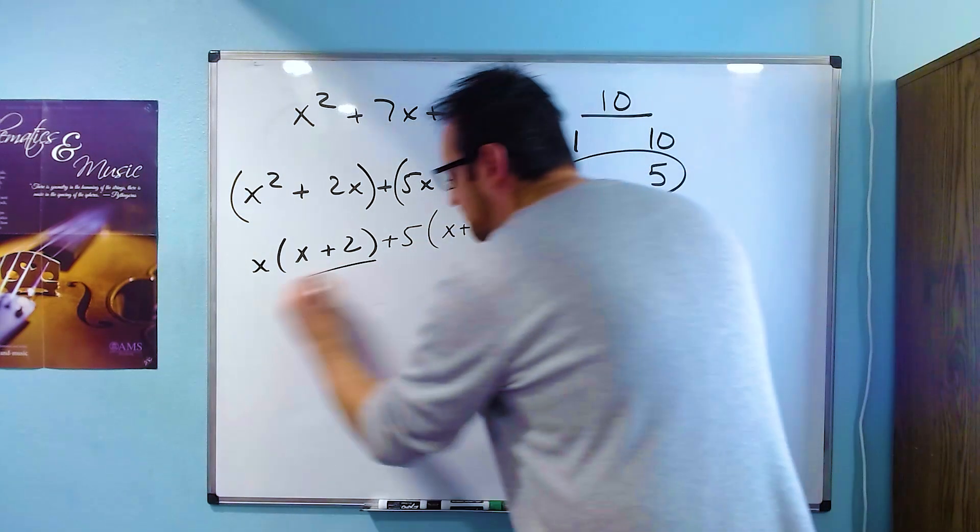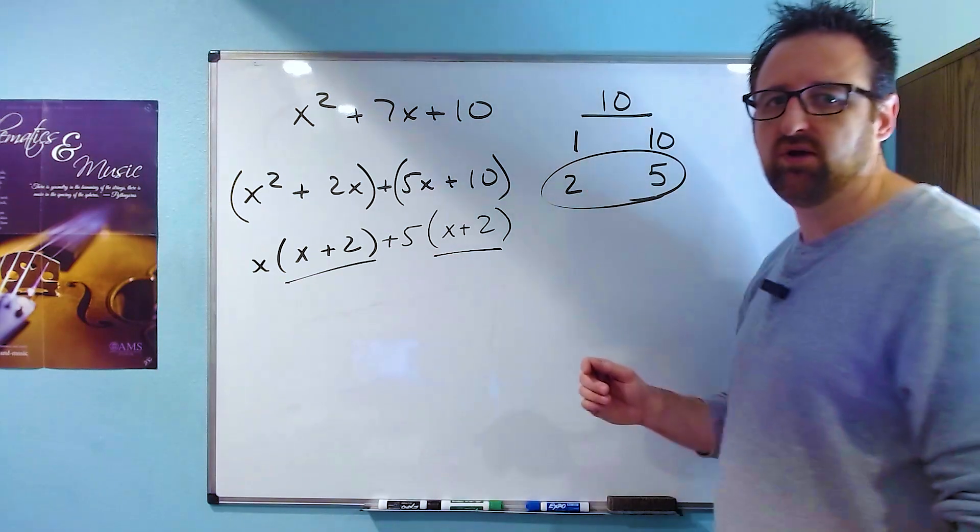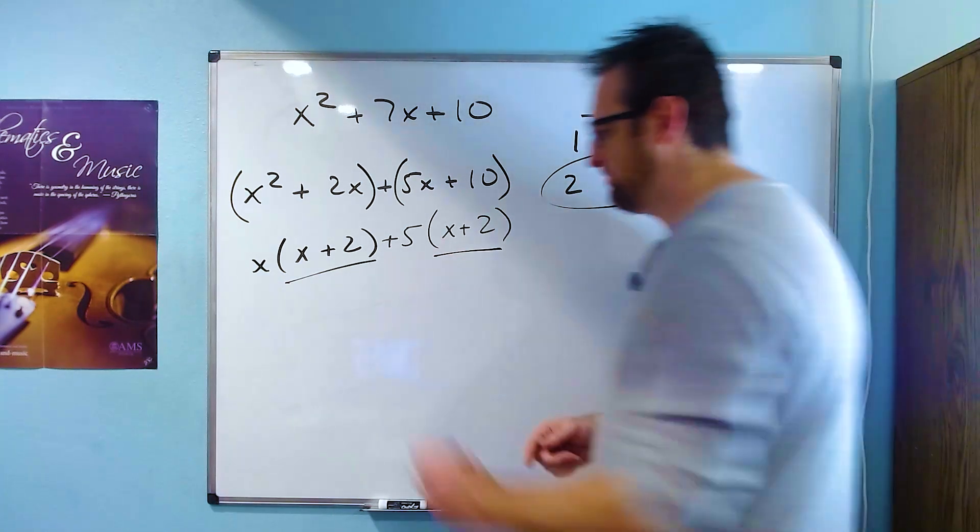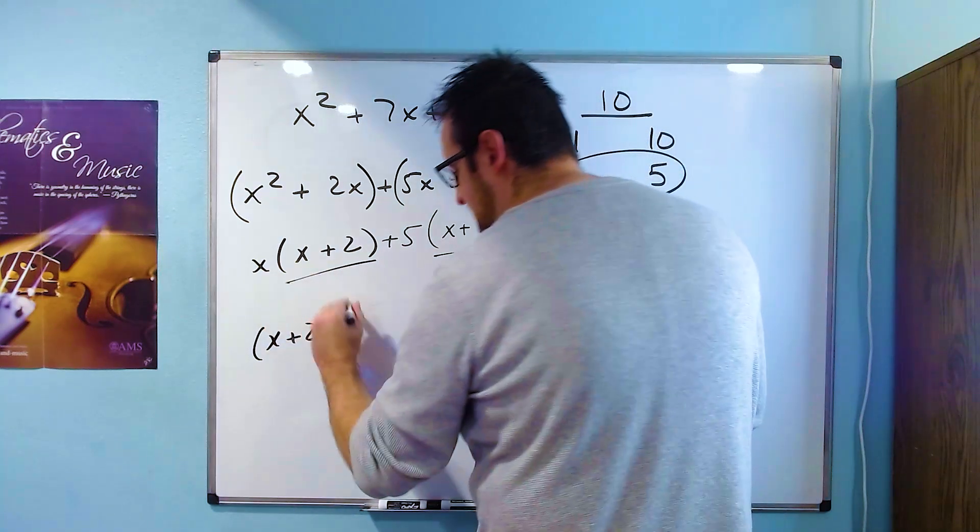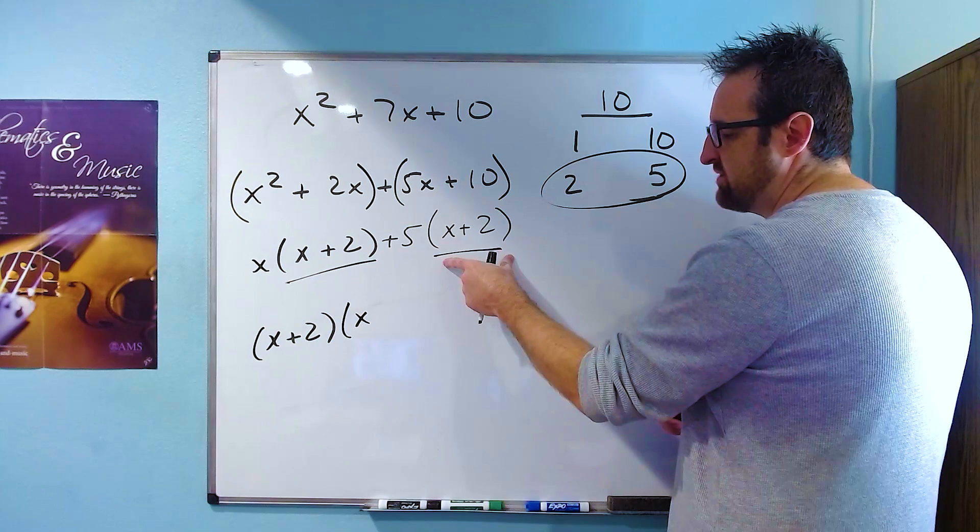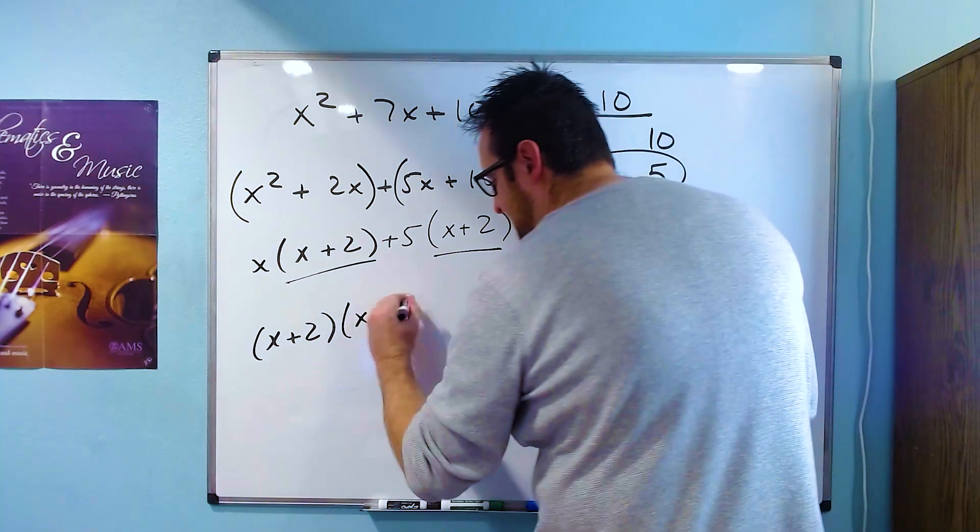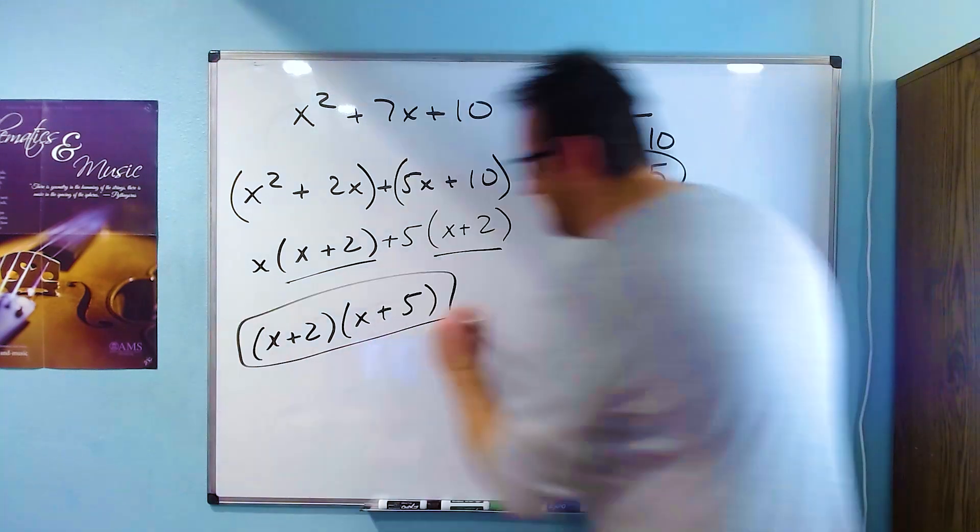At this point, you can see that both terms have an x plus 2. And so we'll factor that term out as well. And what's left over when I divide an x plus 2 out of this first term is just an x. And when I divide an x plus 2 term out of here, I just get a 5. And that's the factored form of this polynomial.